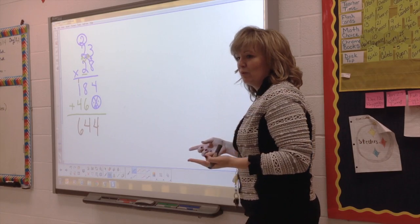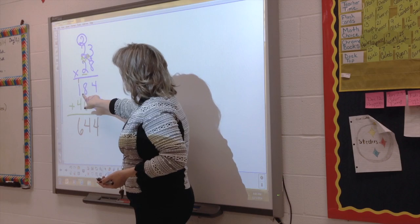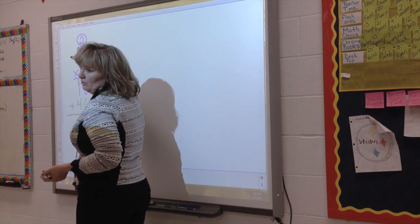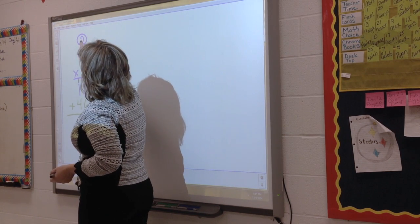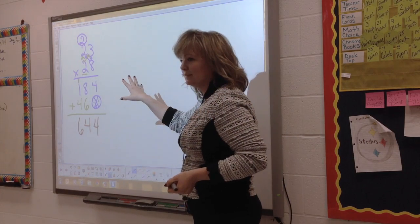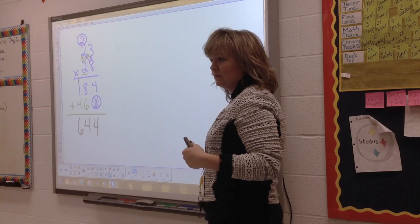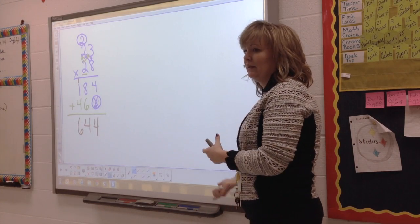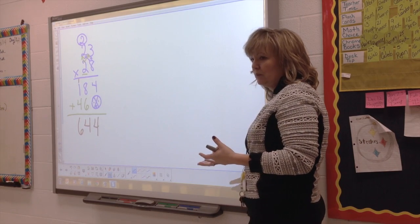The biggest mistake in fourth grade — what do fourth graders do? They forget that zero. Their answer will be 184 plus 46. Or they'll forget the two, or do two times two equals four times eight — that's where it gets confusing. We understand it because it was drill and kill for us. But for the kids, they don't understand the why. And so when they get to higher-level math, that's where it gets troublesome.